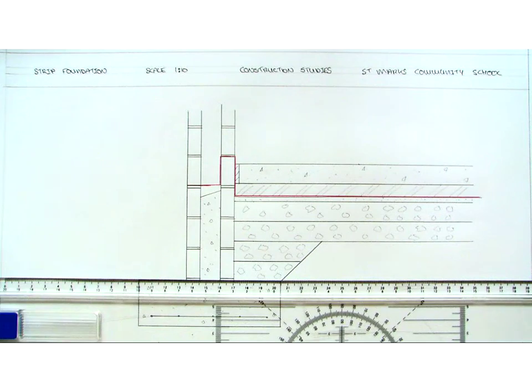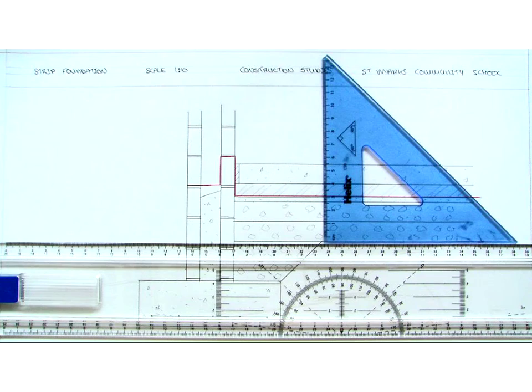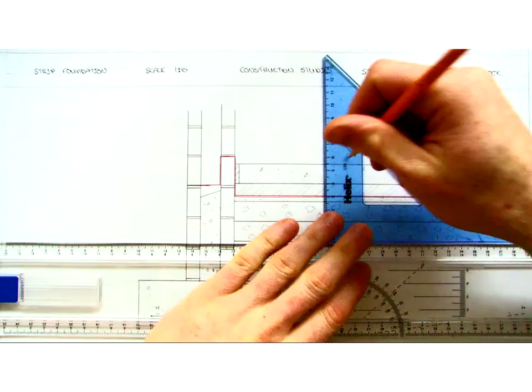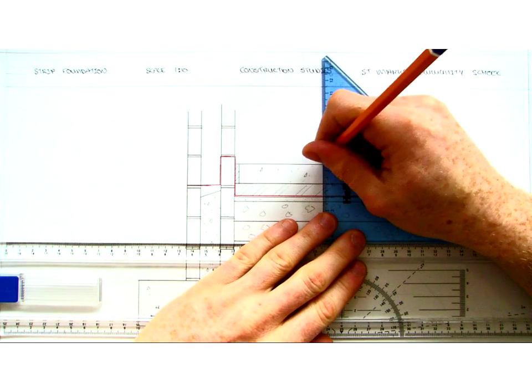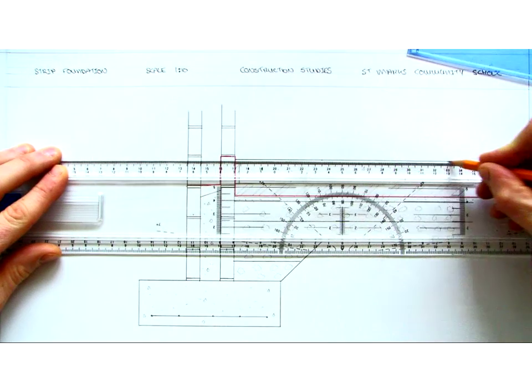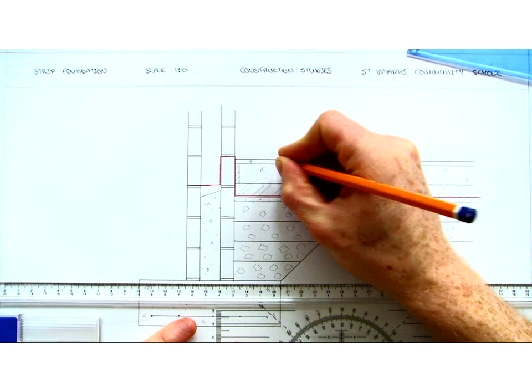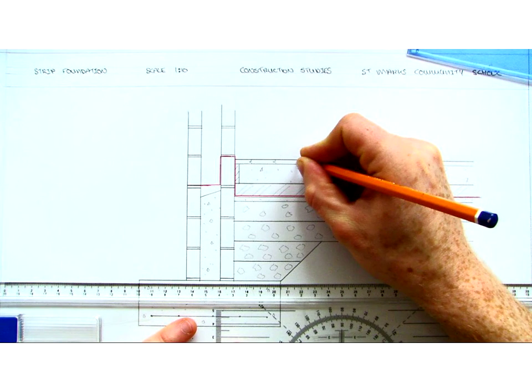And finally, on top of that we are going to place our finished floor. So in this instance we are going to use a tongue and groove timber floor of 25mm thickness. I can indicate that it is tongue and groove by drawing in the joint.